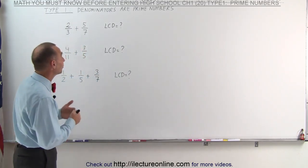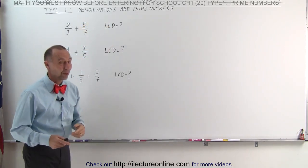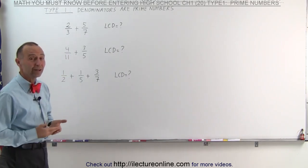So in this video, we're going to take a look and see how to find the lowest common denominator when the denominators are prime numbers. Well, the technique is rather easy. All we have to do is multiply the denominators together.